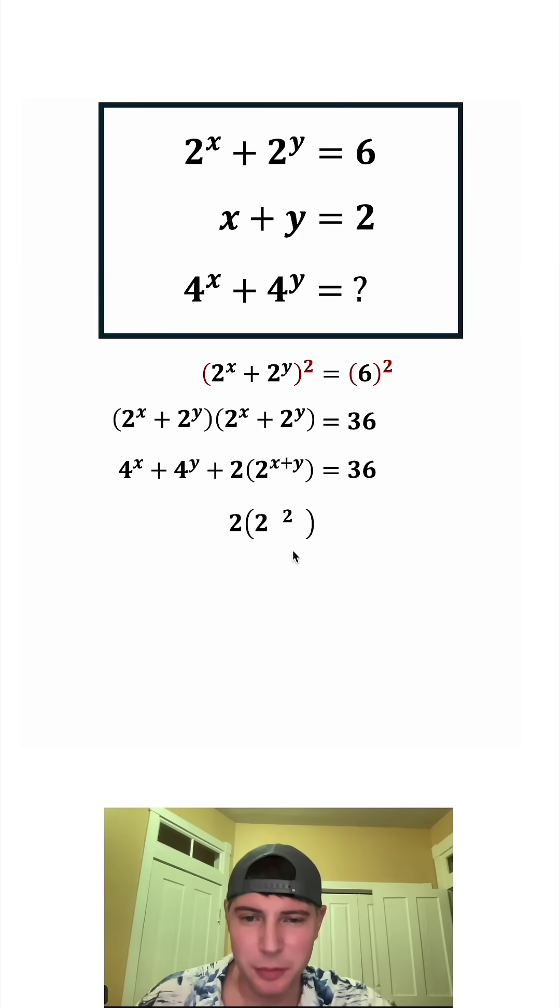So this inside of the parentheses will be 2 squared. And 2 squared is equal to 4. And 2 times 4 is equal to 8. So this whole third term is equal to 8. And let's copy down everything else.